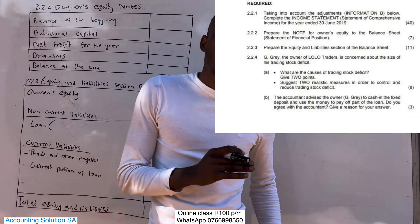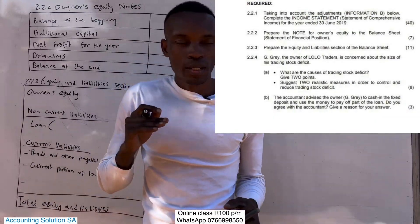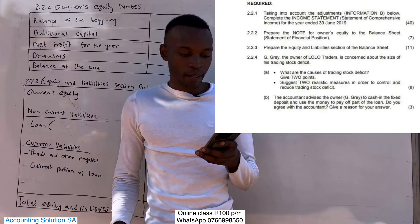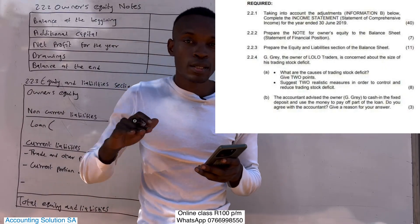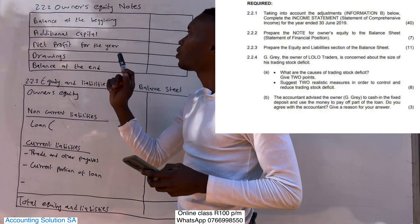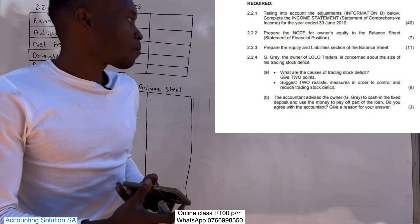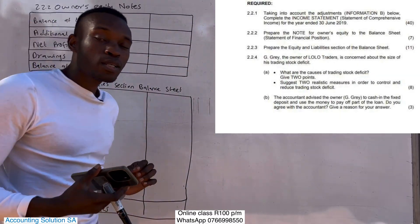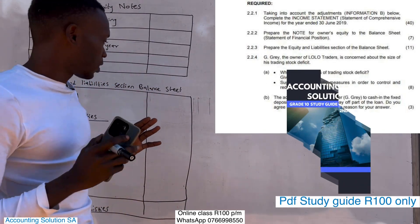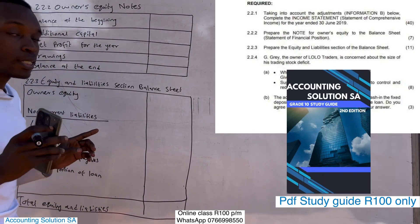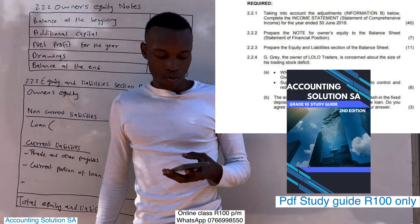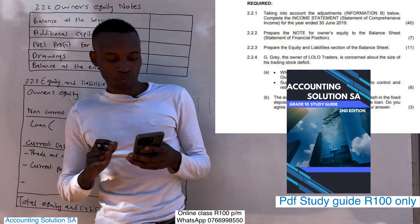Hi, great students. In this video we are going to do a continuation. Remember the question paper that we were doing — the first part we were required to prepare an income statement, which was worth 40 marks. We are going to continue from the notes of the balance sheet, which is called the owner's equity notes. Then after that we are going to complete the part where they requested us to prepare a balance sheet — but not all of it. We were required to prepare the owner's equity and liability section only, which means we were not required to prepare an asset section.